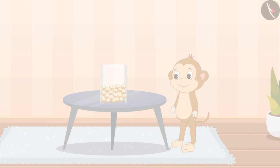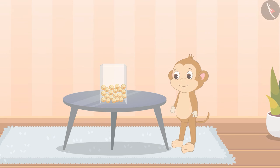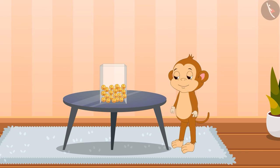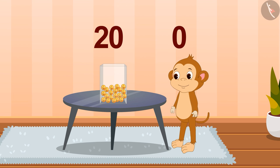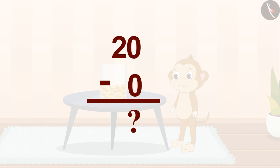Children, now it's your turn to find the solution to this fun puzzle. There are 20 marbles in a box in front of Bablu. Bablu did not pick up any marble. How many marbles are left in the box now? Share your answer with your family and friends.